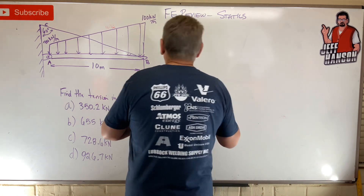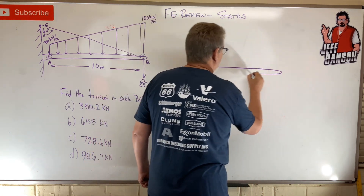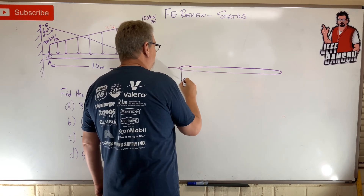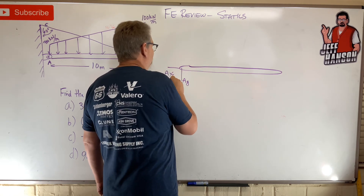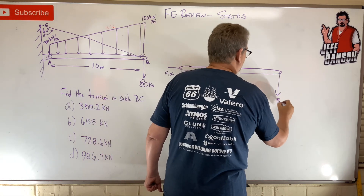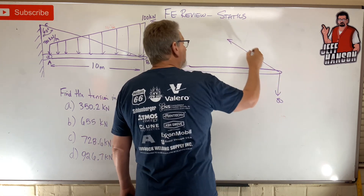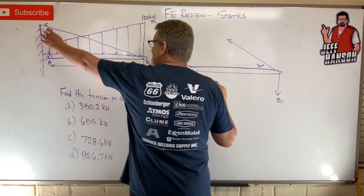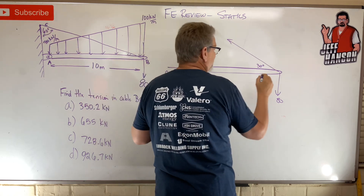Okay, so here's what we got. We've got a beam — it's pin-connected at this end: A_y and A_x. Now this angle is 30 degrees — if that's 60, then that has to be 30.